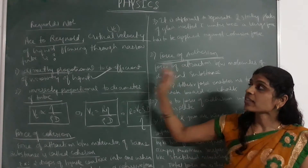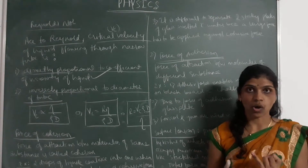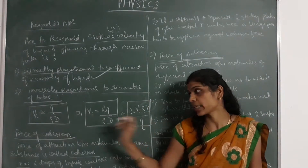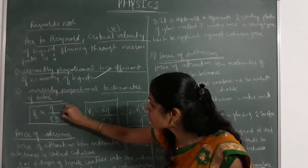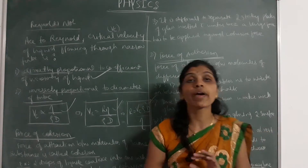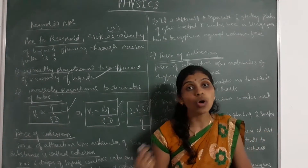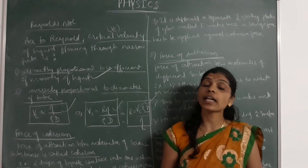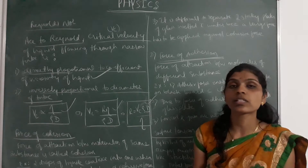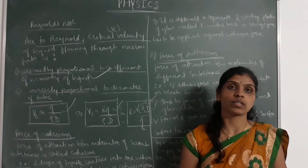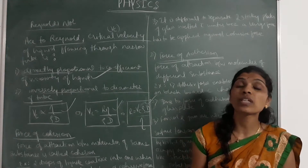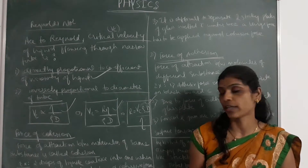Here, Vc is the critical velocity, ρ is the density, d is the diameter, and η is the coefficient of viscosity. Reynolds number and critical velocity are related and represented by the mathematical formula. You have to remember all these formulas because they are helpful while solving problems. Next, we shall see different kinds of forces: cohesive force and adhesive force.